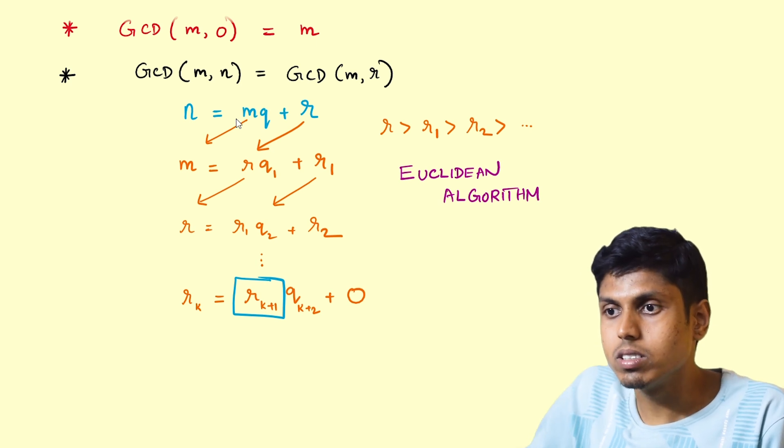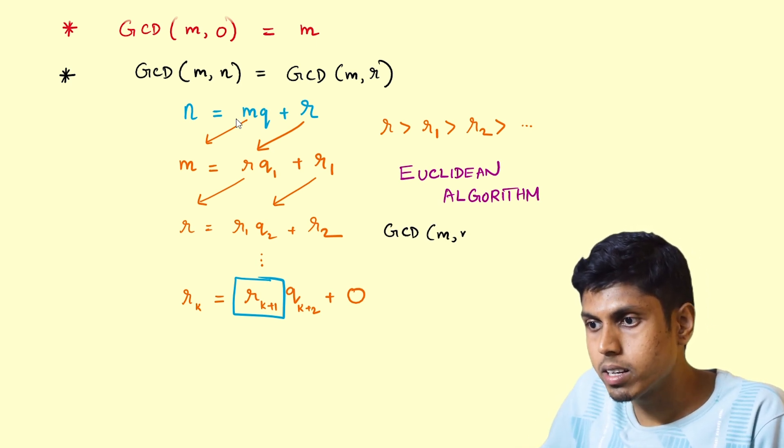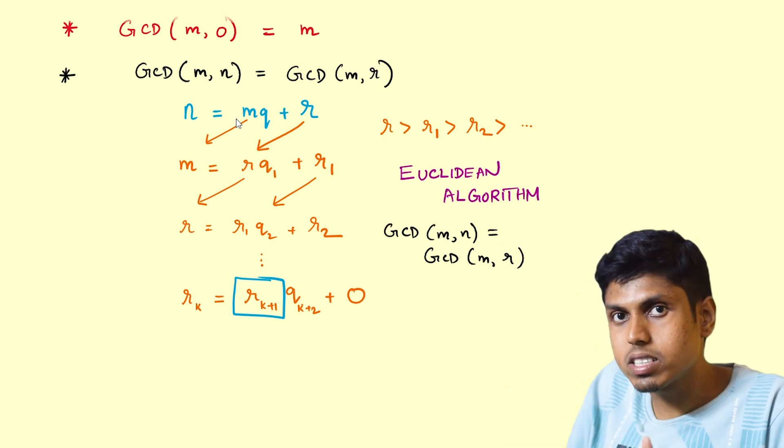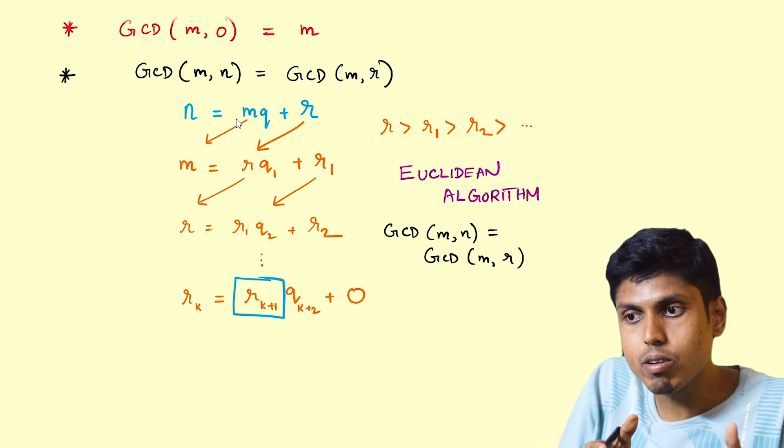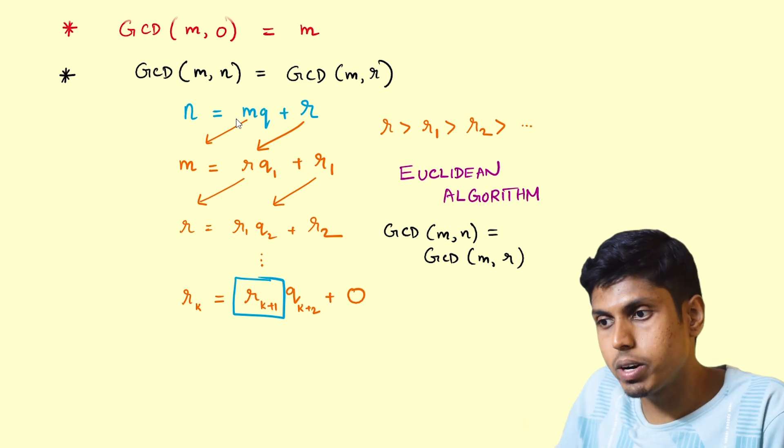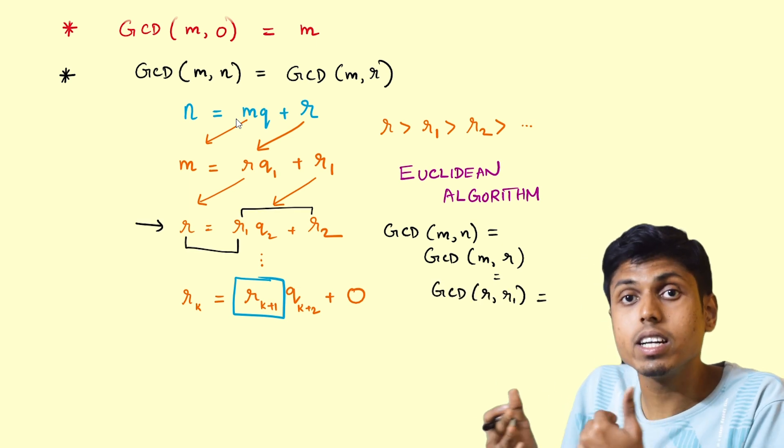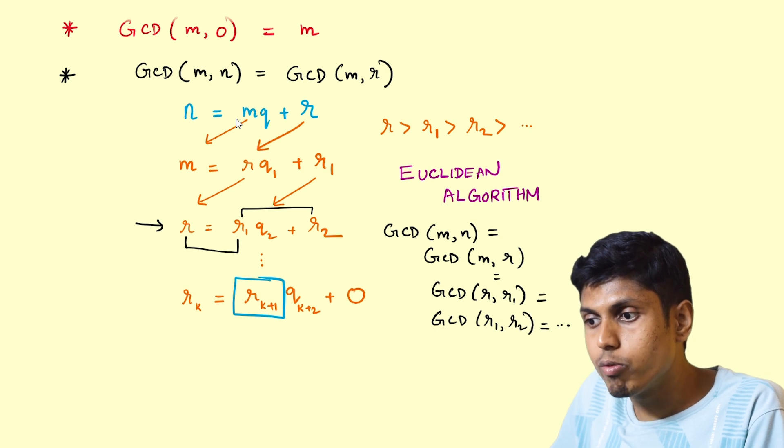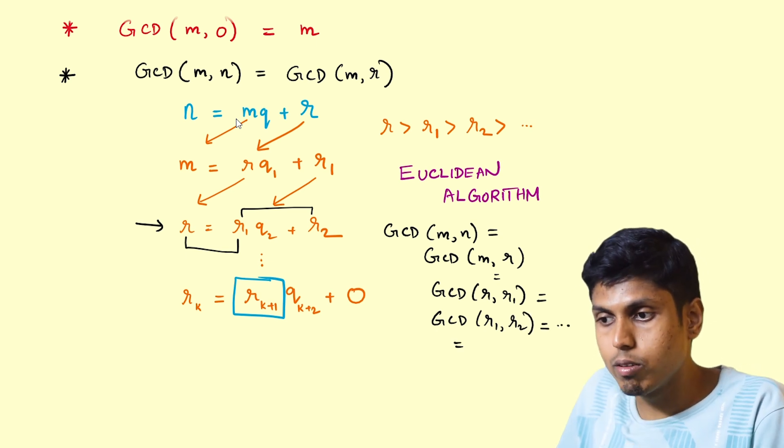Notice this: GCD of m comma n equals GCD of m comma r for the first step. Now come to the second step of the algorithm. GCD of m comma r equals GCD of r comma r1, GCD of divisor and the remainder, which is GCD of r1 comma r2.